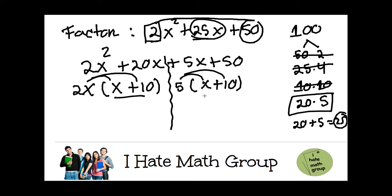Remember, the parentheses must be the same. If the two parentheses are not the same, you did something wrong. My final answer, you grab this 2x with this 5, so this is 2x plus 5, and the other factor is going to be x plus 10.